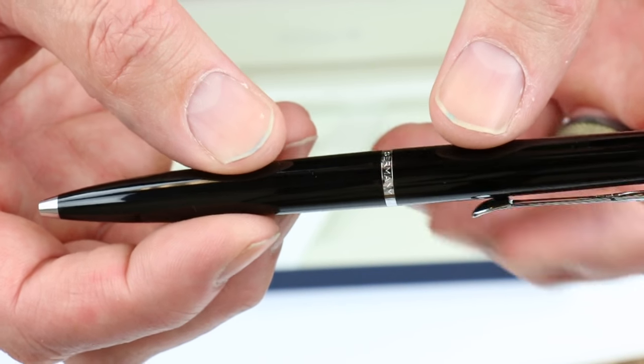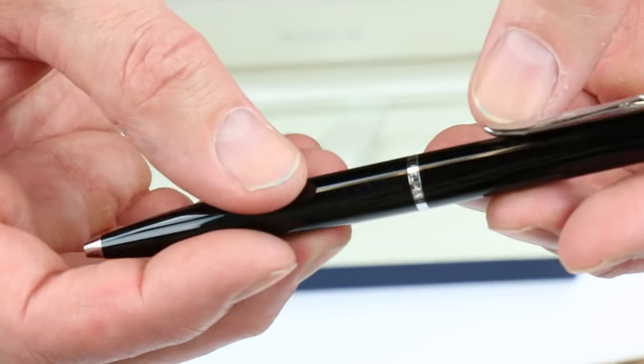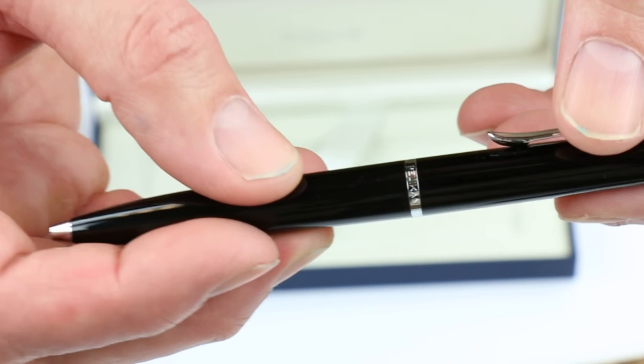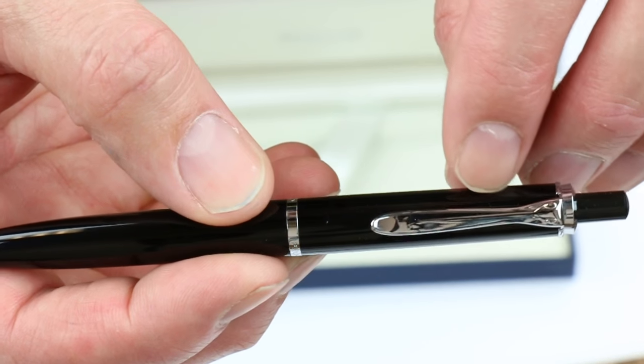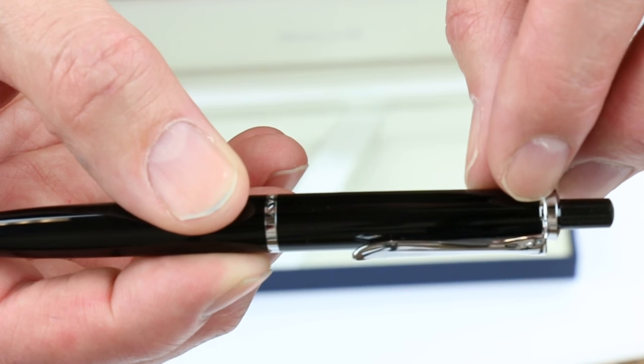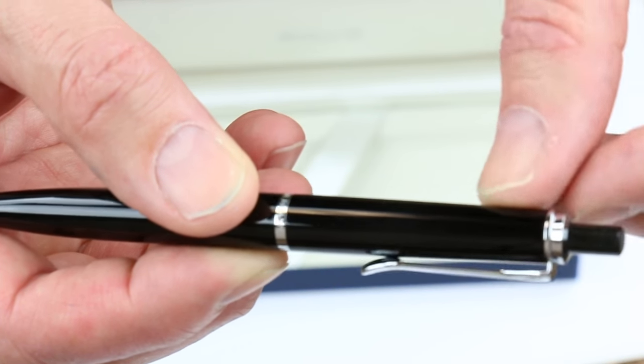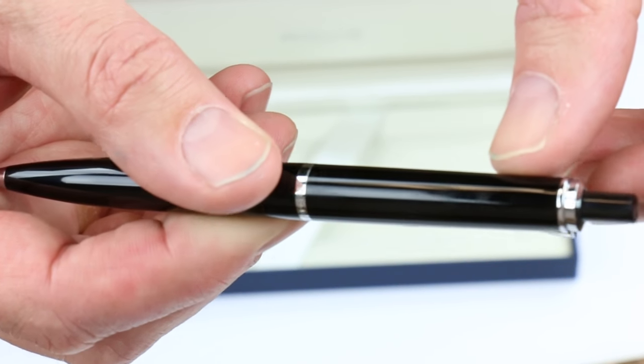There's a chrome band in the middle of the pen with Germany and Pelican engraved on the band, and the traditional Pelican bill shaped clip with a chrome ring at the top of the pen.